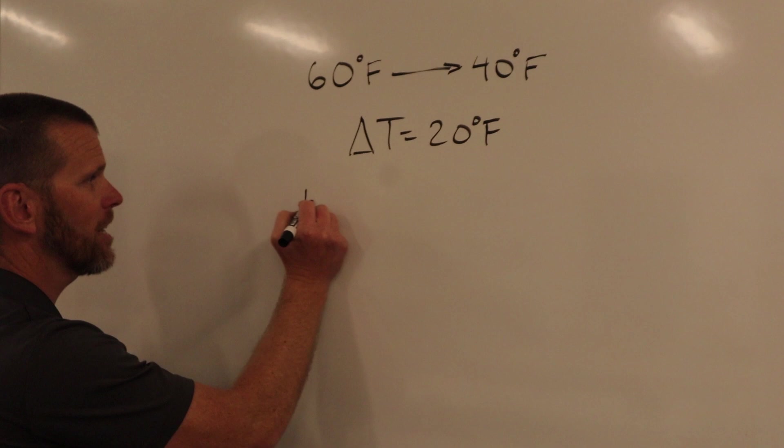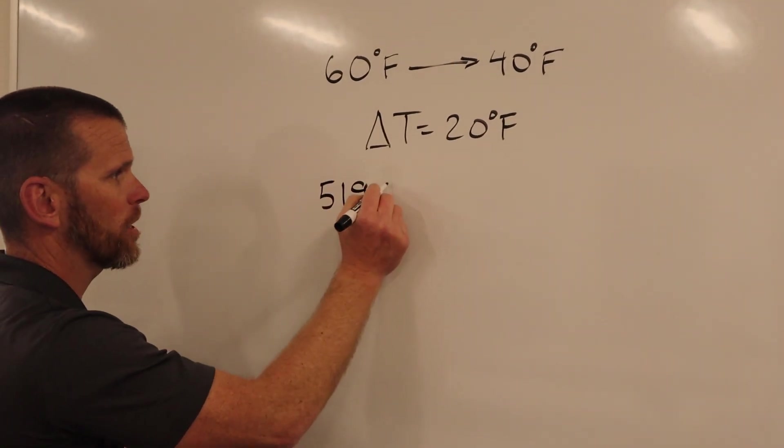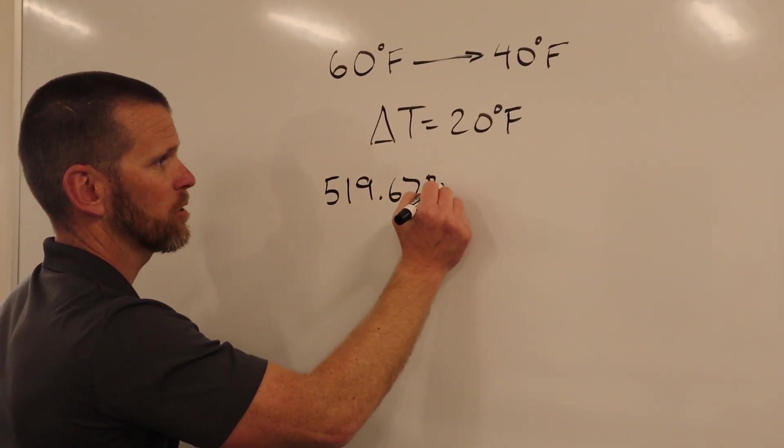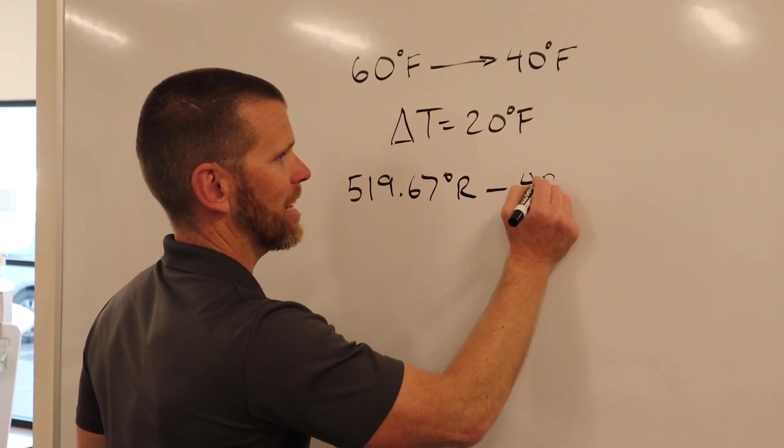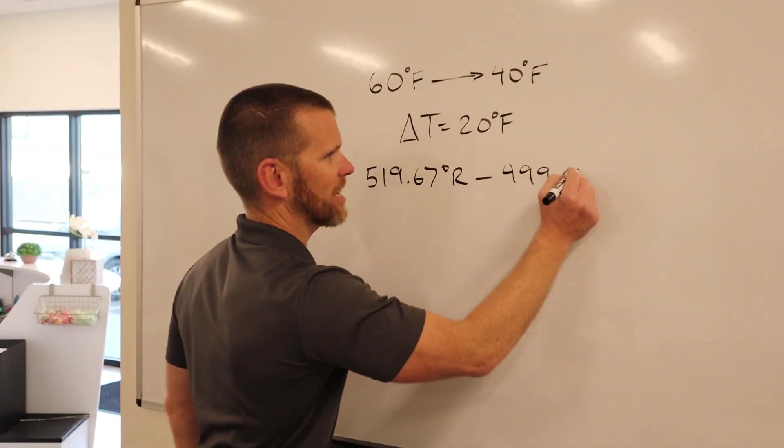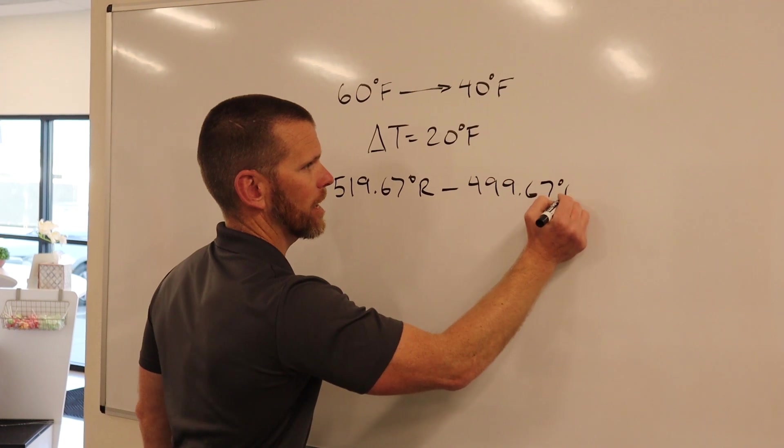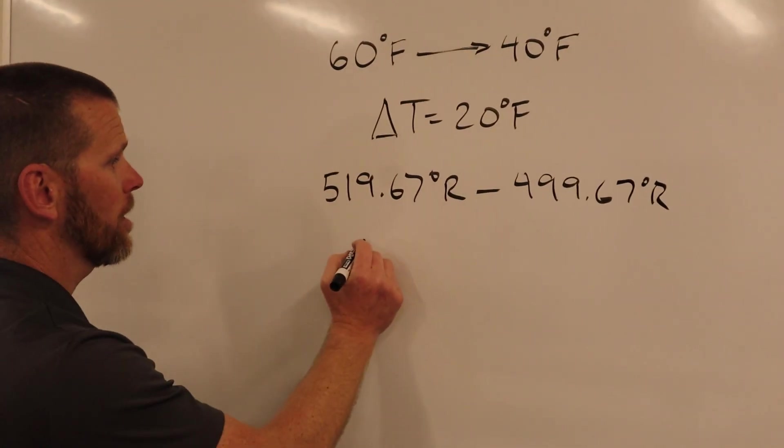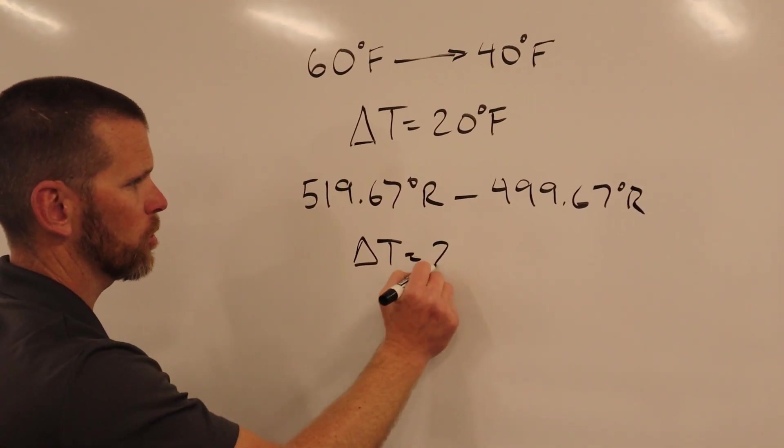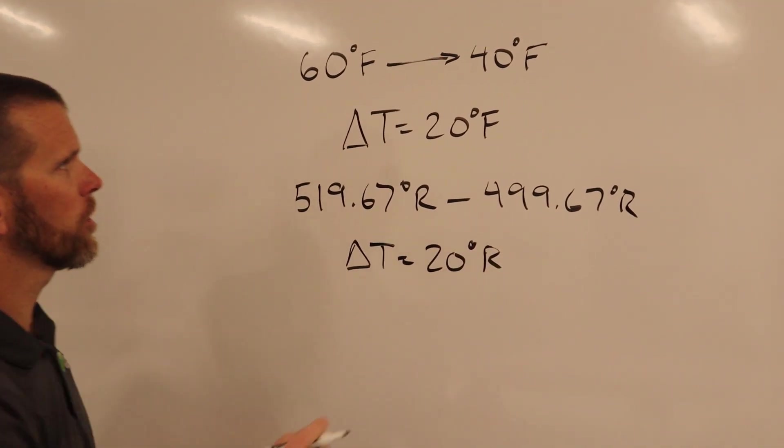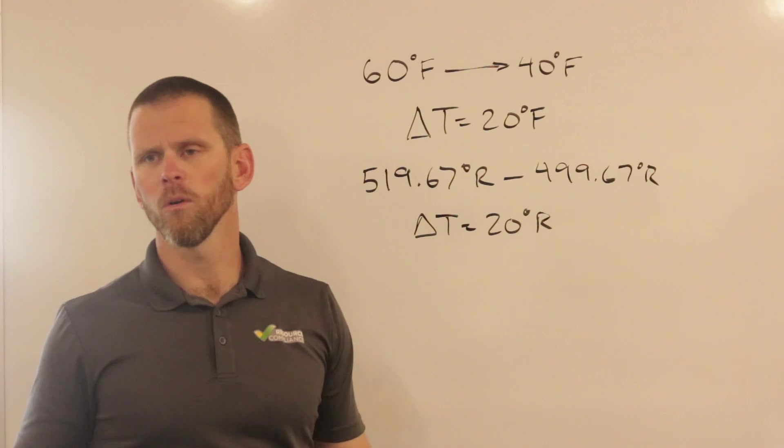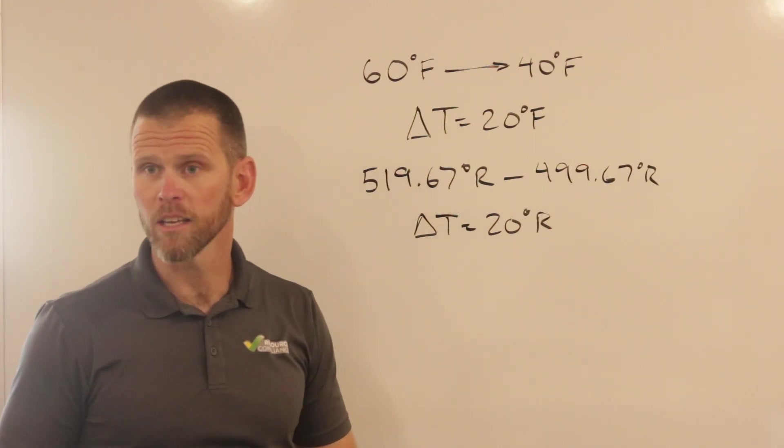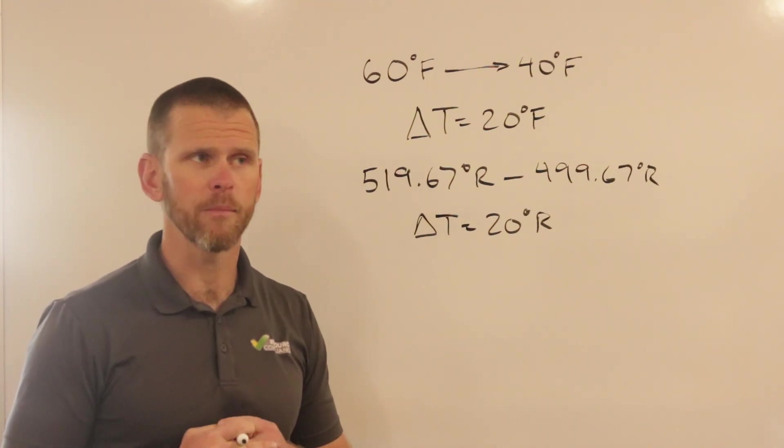I want to point out, though, if we were to use the Rankine scale, then that would be 519.67 degrees Rankine minus 499.67 degrees Rankine, which also equals 20 degrees Rankine. So when you're dealing with a delta T, it doesn't matter whether you work in Fahrenheit or Rankine because you'll arrive at the exact same answer.